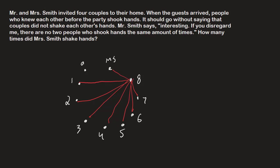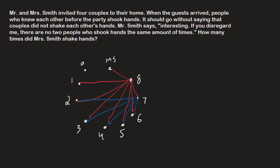Now let's look at person 7 — they shook hands with 7 people. They didn't shake hands with person 0 for the same reason, and they didn't shake hands with person 1 either. Why? Person 1 only shook hands once, and they've already done that with person 8 — we forced that. So we know that person 7 shook hands with persons 2, 3, 4, 5, 6 — that's 5 lines — plus person 8 (already drawn) and Mr. Smith. That's the 7 people they shook hands with.